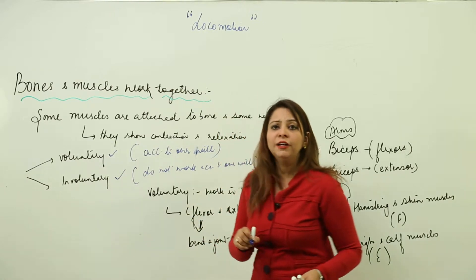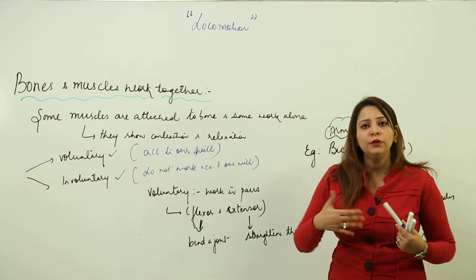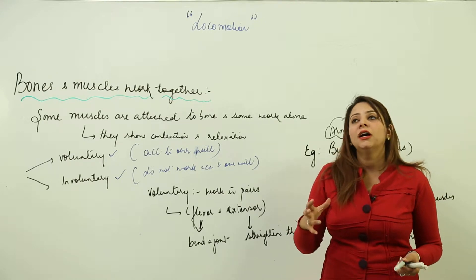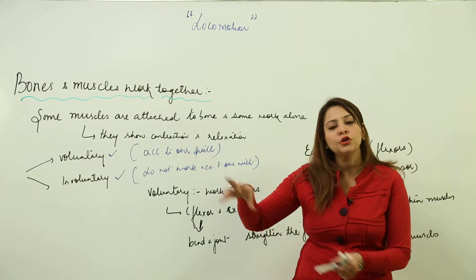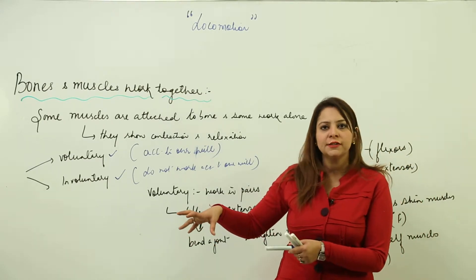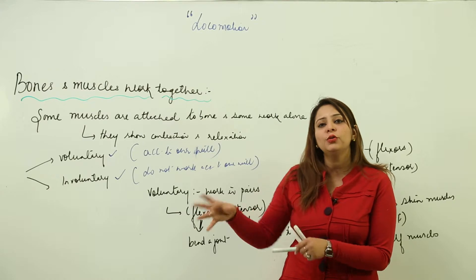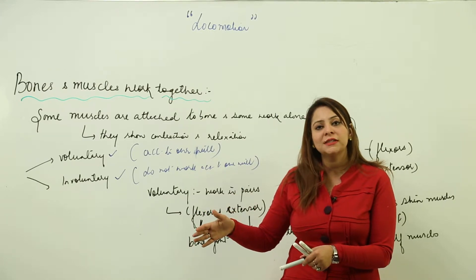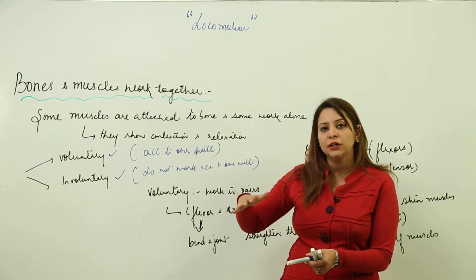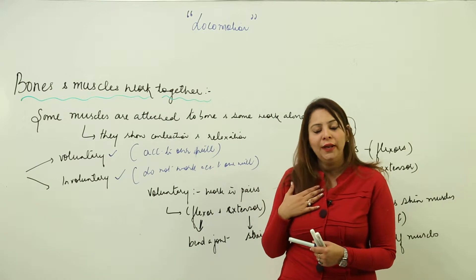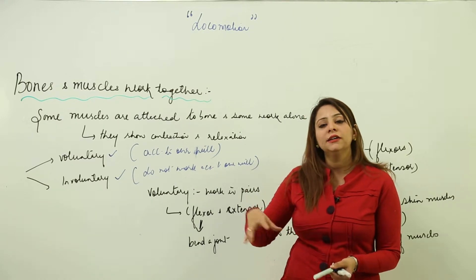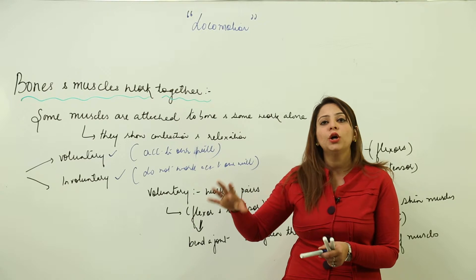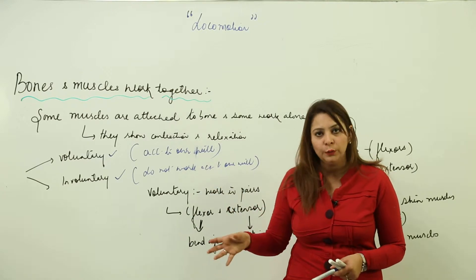Involuntary muscles are those which do not work according to our will — their movement is not shown when we want it. They are actually part of the autonomic nervous system. We have two kinds of nervous systems: one controlling muscles that work by our will, and one containing muscles that do not.